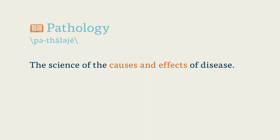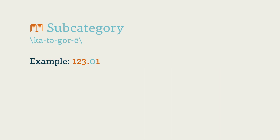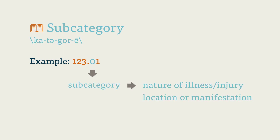Pathology: the science of the causes and effects of disease. Subcategory: in ICD codes, the subcategory describes the digit that comes after the decimal point. This digit further describes the nature of the illness or injury, and gives additional information as to its location or manifestation.